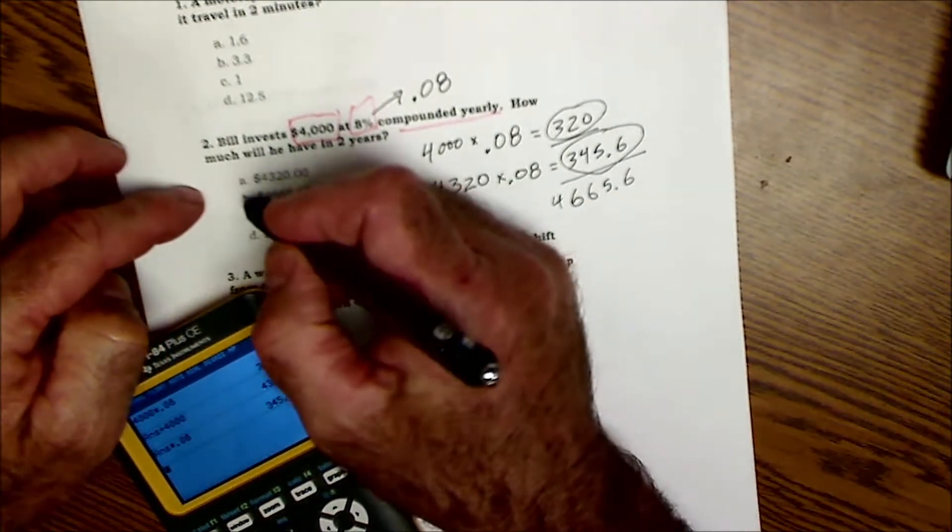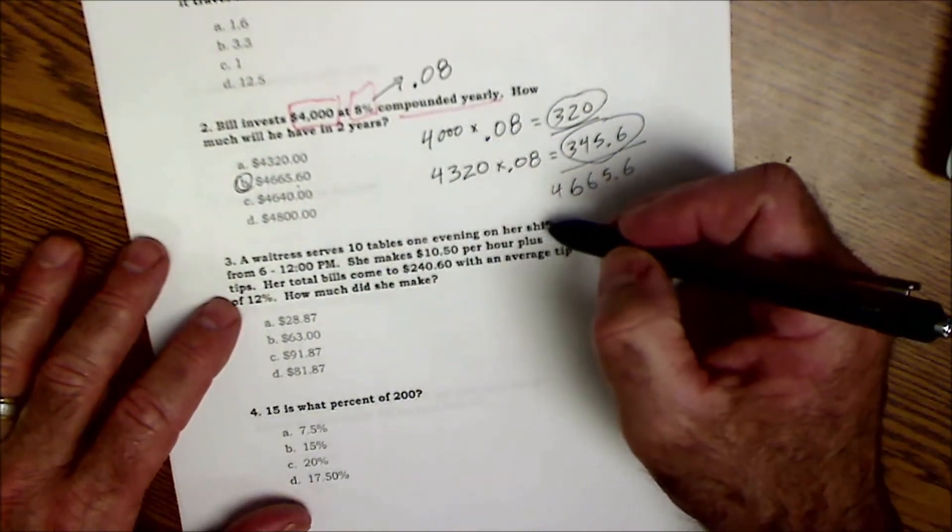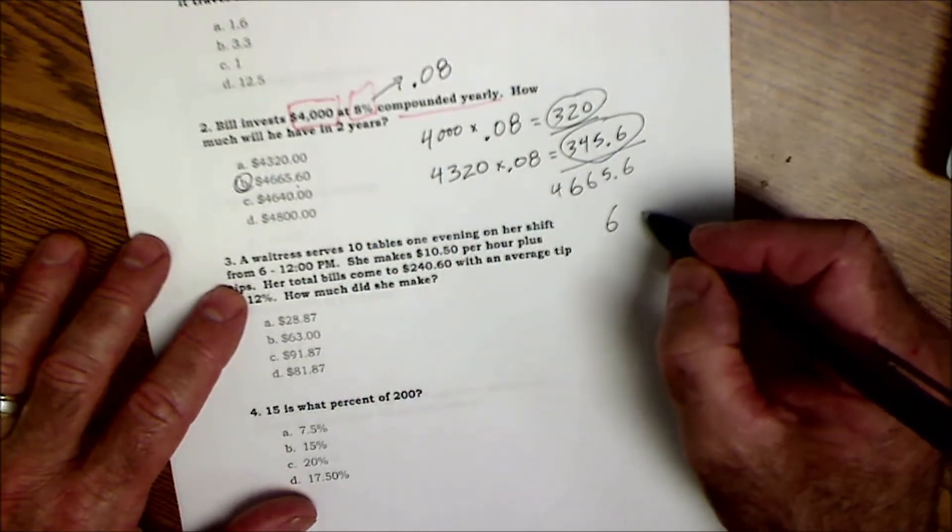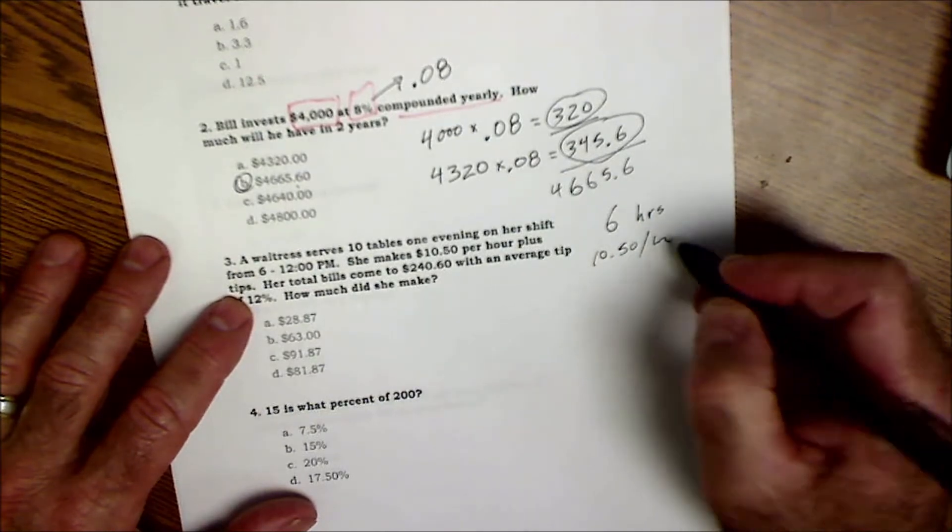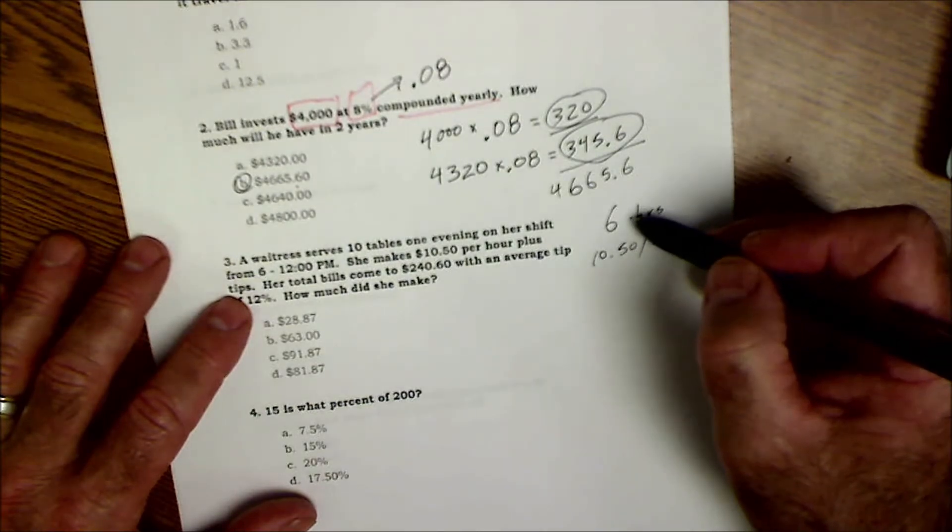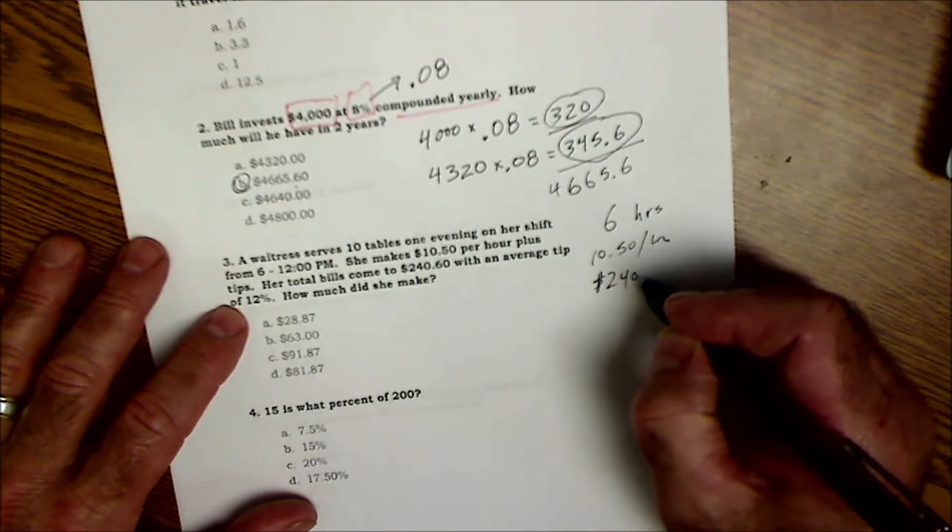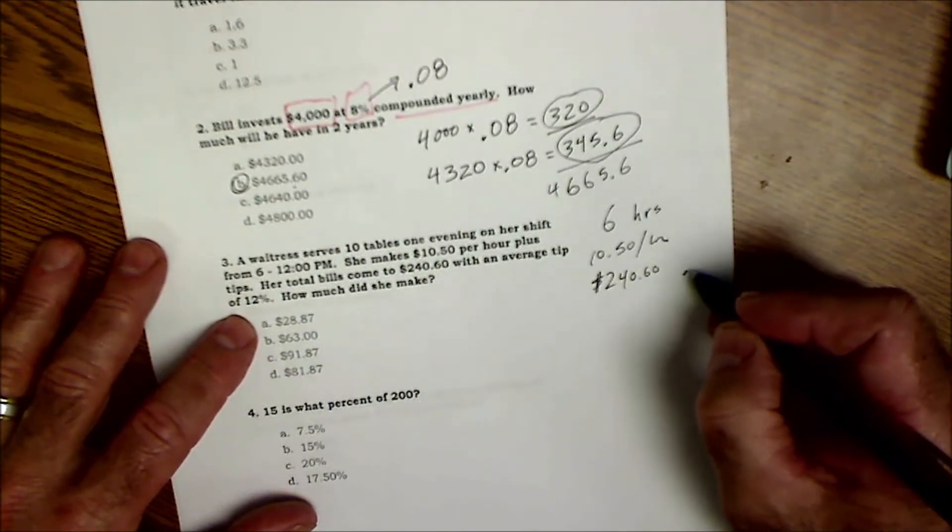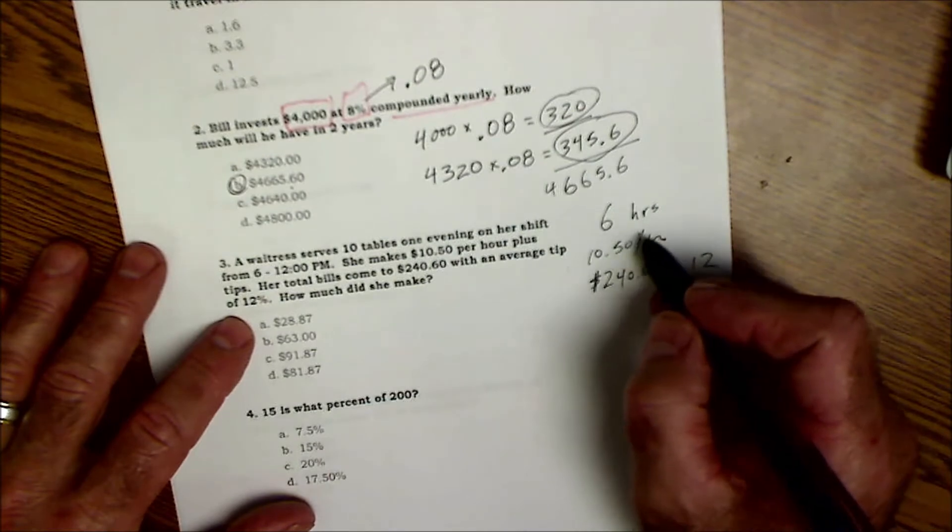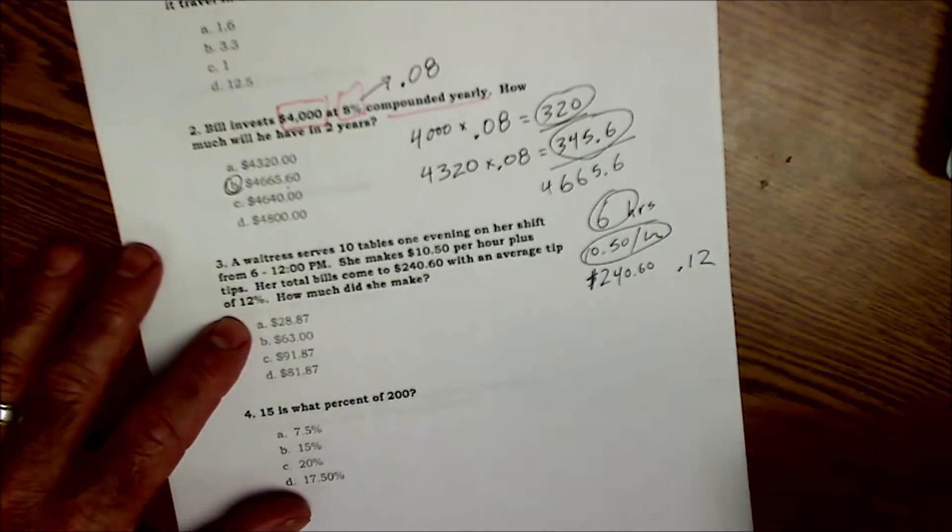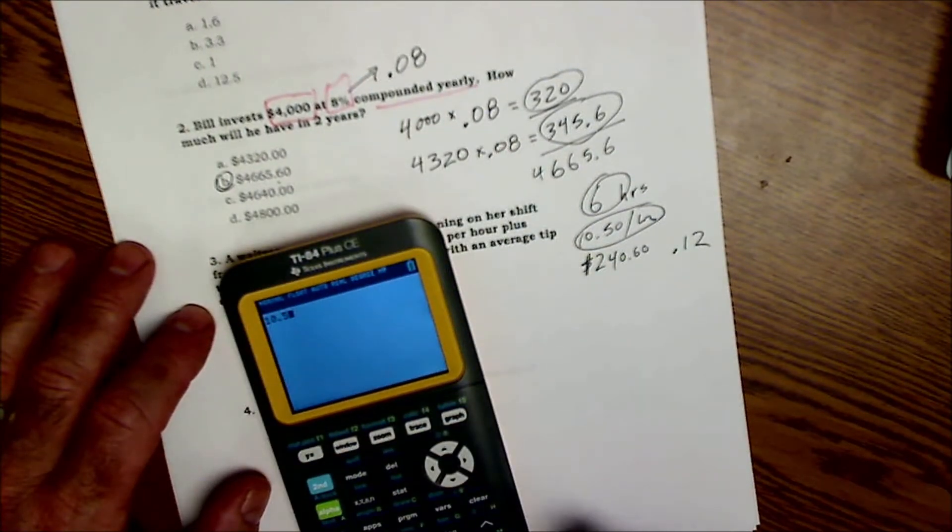Okay, number three. A waitress serves 10 tables one evening from 6 until 12, so she works for 6 hours. She makes $10.50 per hour, so I'm probably going to end up taking that hourly rate times the hours. Her total bills for all the tables is $240.60 with an average of 12%. I'm going to write that down as 0.12. How much did she make? What she made: I'm going to take the hourly rate times the hours, so she makes $10.50 times the 6 hours, she makes $63 in wages.